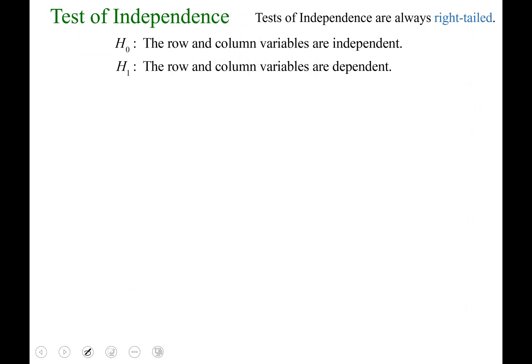To set up your null and alternate hypothesis, we have right-tailed test always with test of independence. Two capital H's like you're used to. The null hypothesis is that the rows and columns are independent of each other. And the alternative hypothesis is that the row and column variables are dependent on each other.